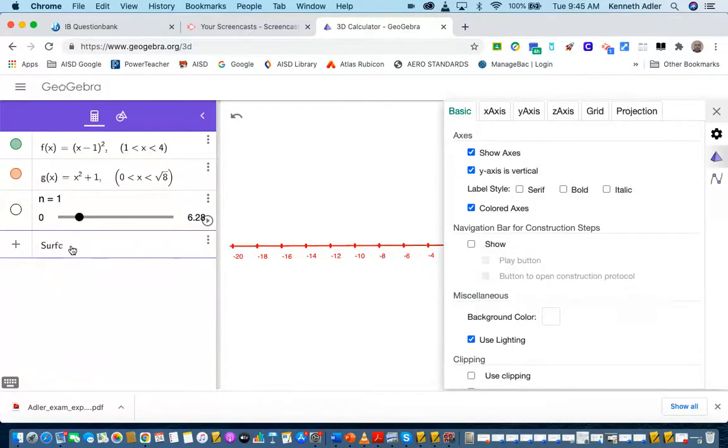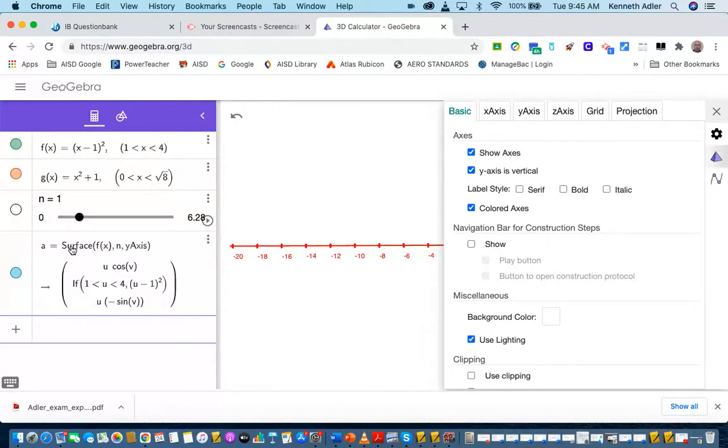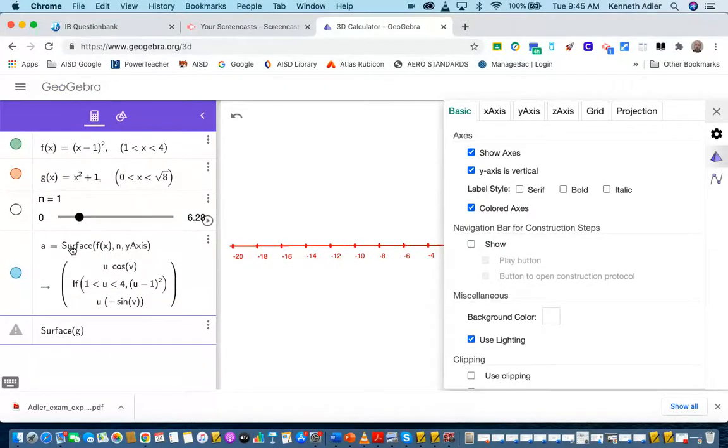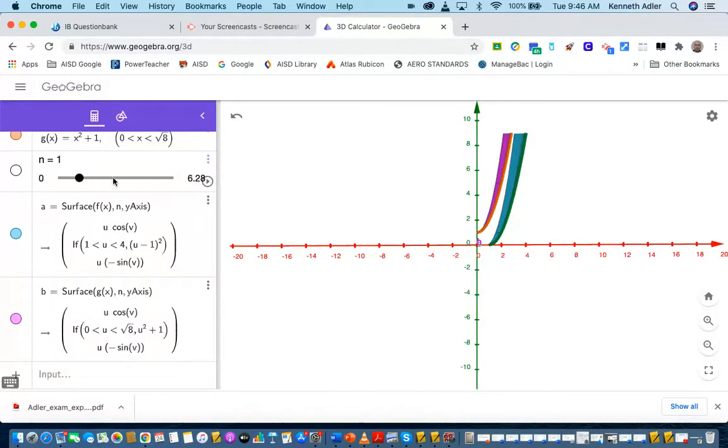You see the slider is from 0 to 6.28. Excellent. Now we're going to do something really cool. Capital S, surface, open parentheses, f(x), comma, N, comma, y-axis. Below that, you're also going to do surface. Instead of f(x), you're going to do g(x). Open parentheses, g(x), comma, N, comma, y-axis. Same exact way. And let's X this out. You ready? This is going to be cool.